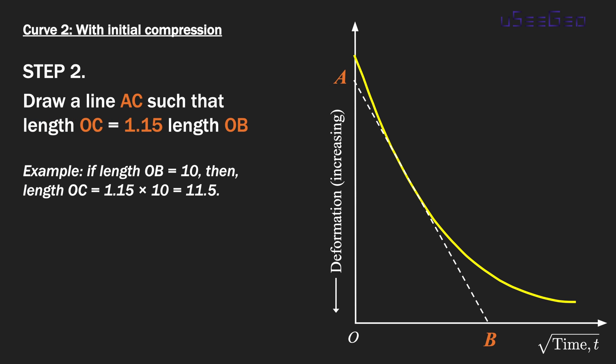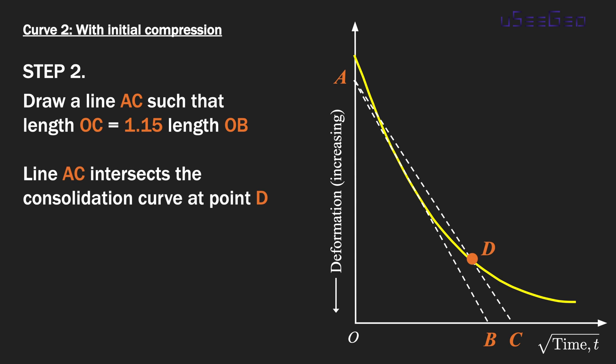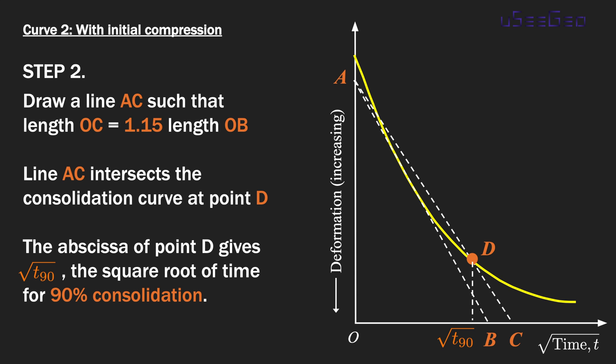From this point on, the method is basically the same as the first case. Draw a line AC, where OC is 1.15 times the length of OB. The intersection of this line AC with your consolidation curve, we call this point D. The corresponding time of point D is the square root of t₉₀—that's the square root of time for 90% consolidation.